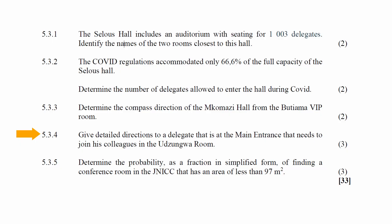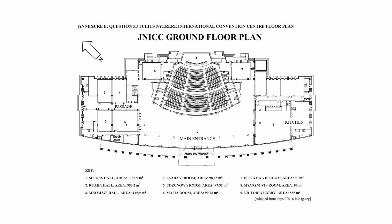In question 5.3.4, you are instructed to give detailed directions to a delegate at the main entrance who needs to reach the Utzungwa room. From the floor plan, the main entrance and the Utzungwa room at number 5 are both visible. The directions are: walk in a northerly direction to the Mukamazi Hall, then walk through the passage between the Mukamazi Hall and the Sadani room, and take the fifth or sixth double door on the right to enter the Utzungwa room.